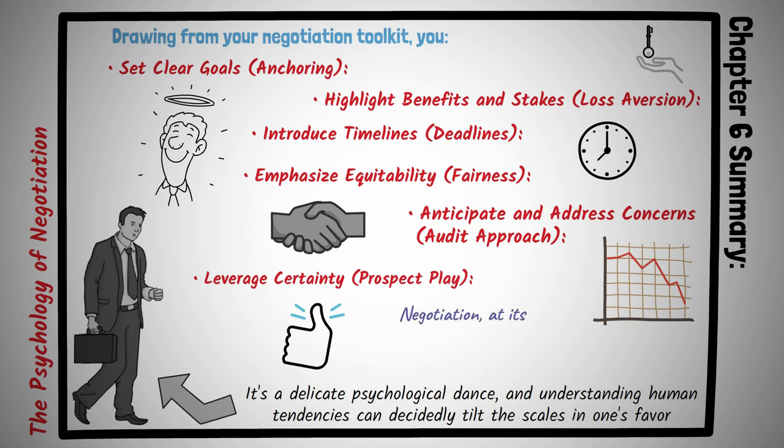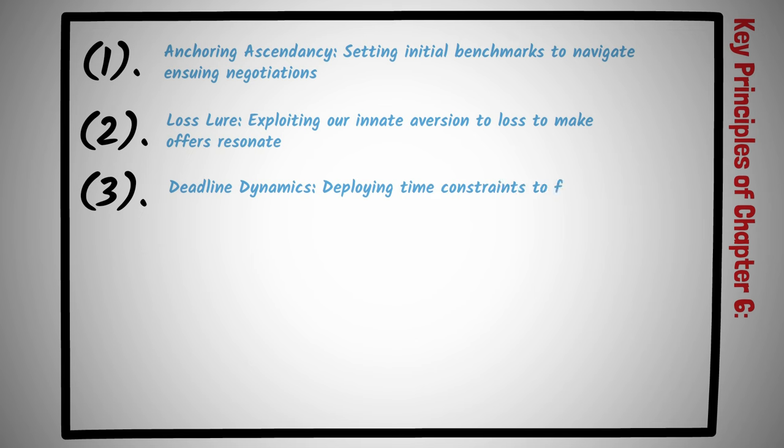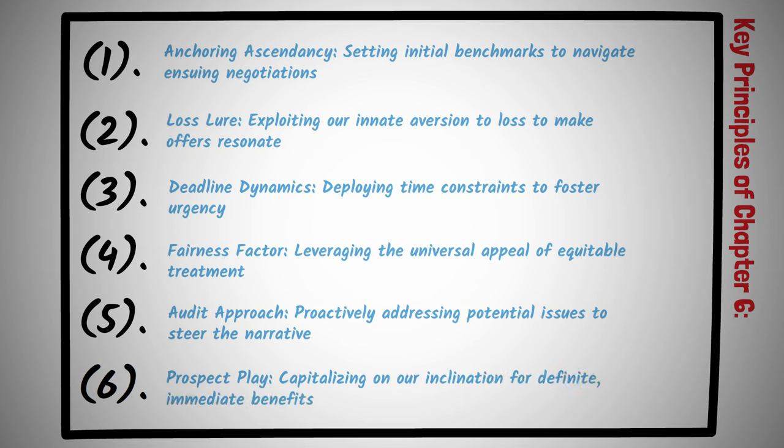In summarization, negotiation, at its heart, is an art form as much as a science. By keenly understanding and wielding key psychological triggers, anchoring, loss aversion, the pressure of deadlines, the draw of fairness, preemptively addressing issues, and the preference for certain outcomes, you can traverse the negotiation landscape with amplified finesse and insight. The key principles of chapter 6. Anchoring ascendancy. Setting initial benchmarks to navigate ensuing negotiations. 2. Loss lure. Exploiting our innate aversion to loss to make offers resonate. 3. Deadline dynamics. Deploying time constraints to foster urgency. 4. Fairness factor. Leveraging the universal appeal of equitable treatment. 5. Audit approach. Proactively addressing potential issues to steer the narrative. 6. Prospect play. Capitalizing on our inclination for definite immediate benefits. Mastering these six principles opens the door to a more informed, psychologically attuned approach to negotiation.